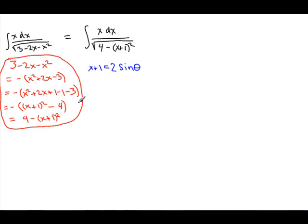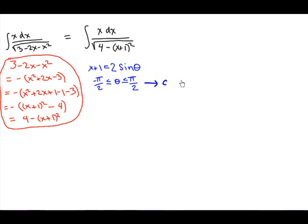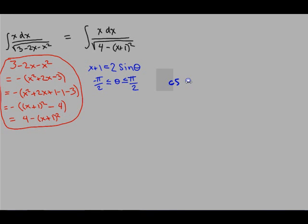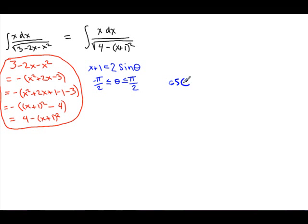So we have x plus 1 equals 2 sine theta. And as we discussed in class today, we have the assumption that negative pi over 2 is less than or equal to theta, less than or equal to pi over 2. And let me just remind you why we have that assumption.